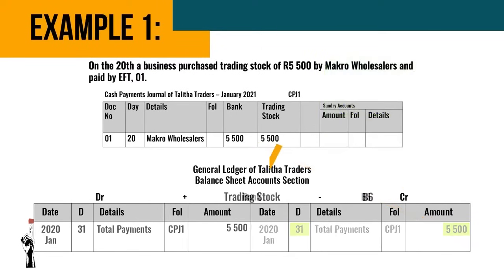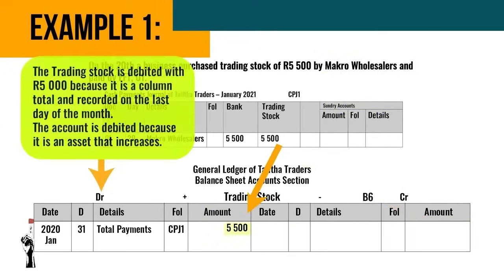Trading stock is debited because it is a column total and recorded on the last day of the month. The account is debited because it is an asset that increases.